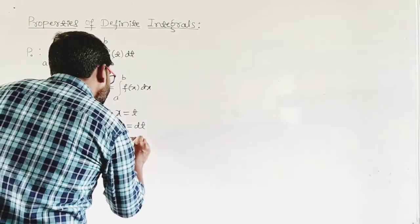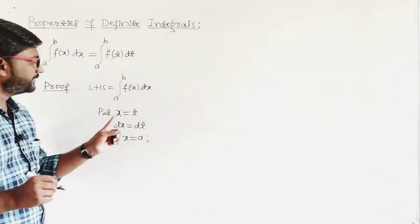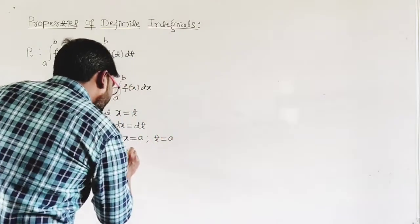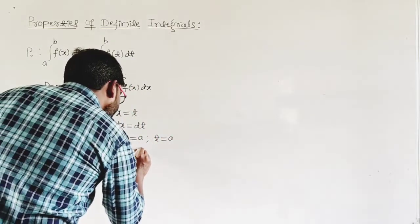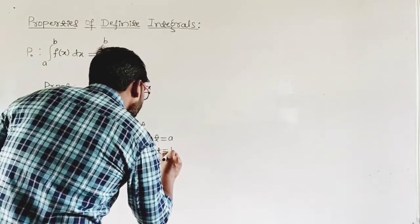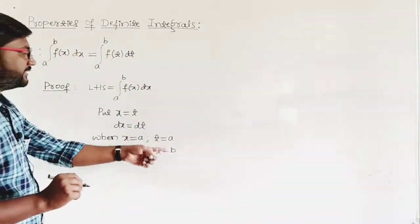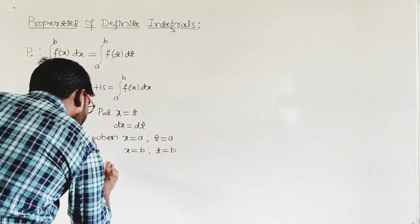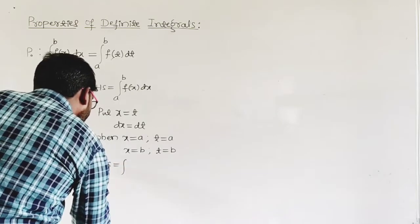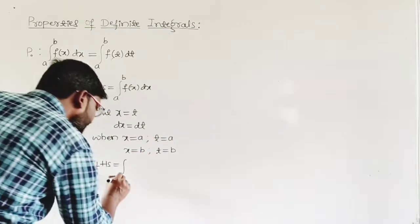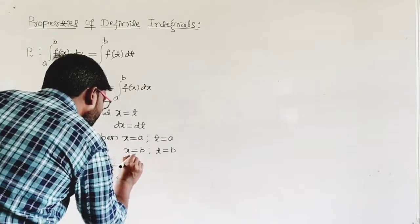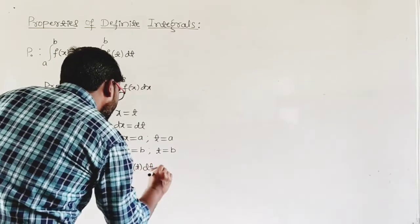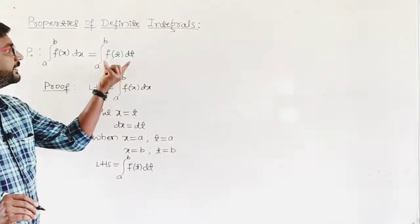Now we have to change the limits as well. When x equals a, t is also a. When x equals b, t is also b. So the limits have not changed. Therefore LHS equals integral a to b of f(t) dt, which is our required RHS.